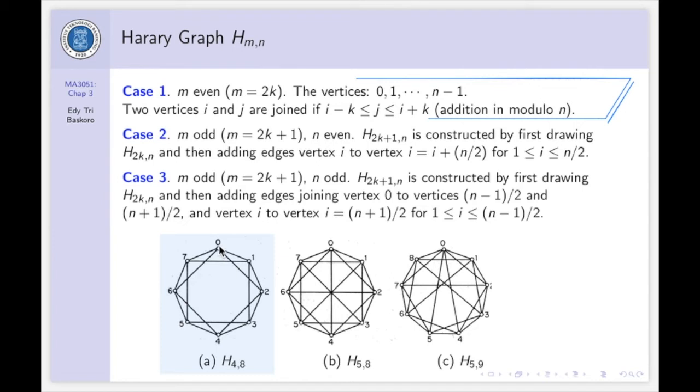For example, 0, we join by 1 and 2. And also, we join by 7 because the difference here is 1. And by 6, because the difference between 6 and 0 is 2 in modulo 8. So, for this case, the graph will be, in general, M-regular.